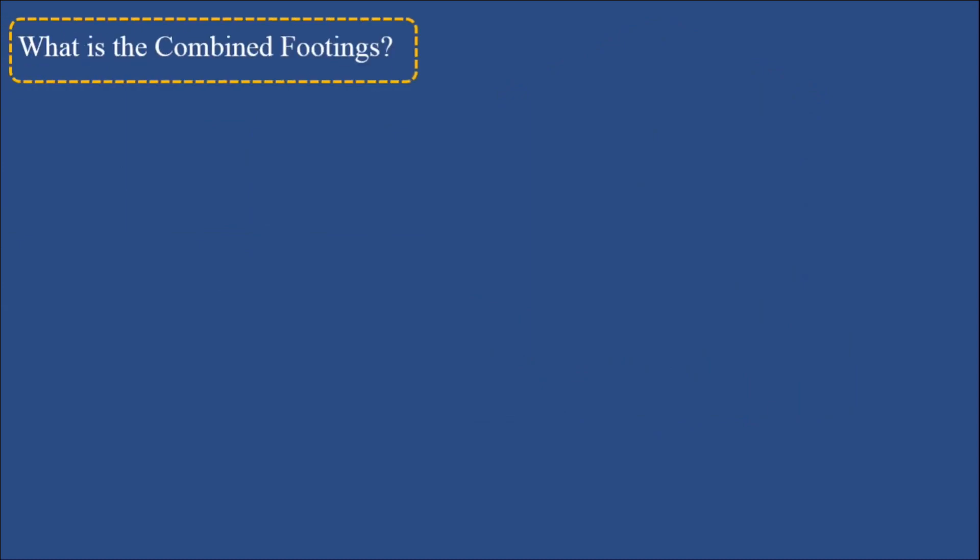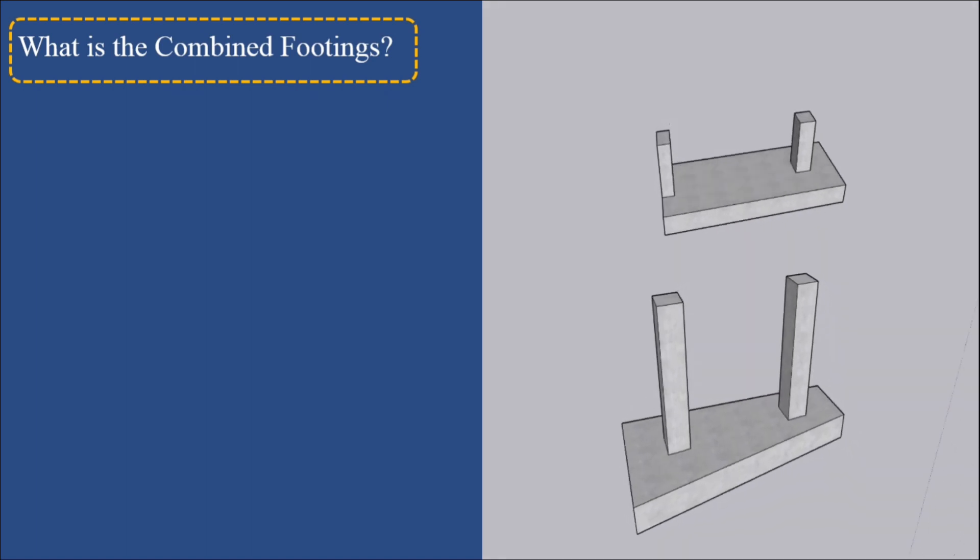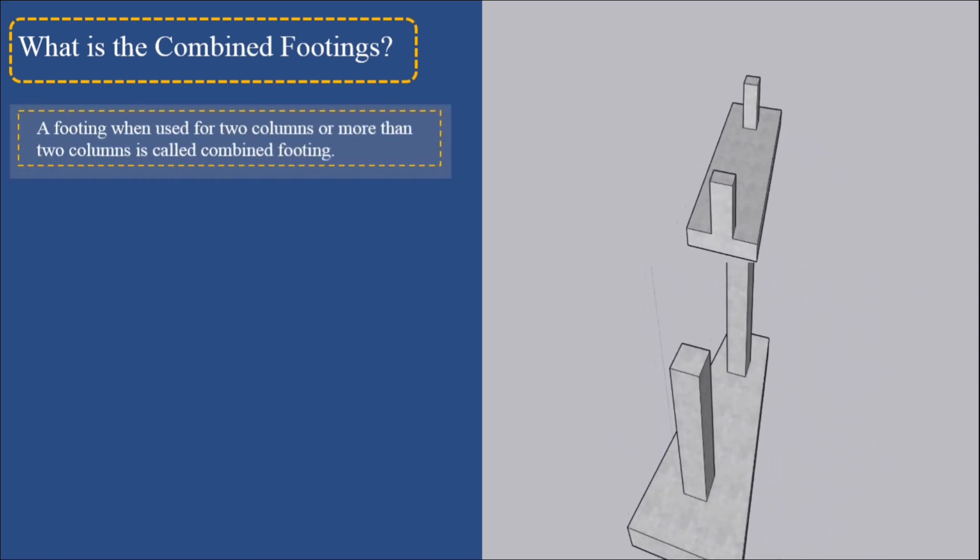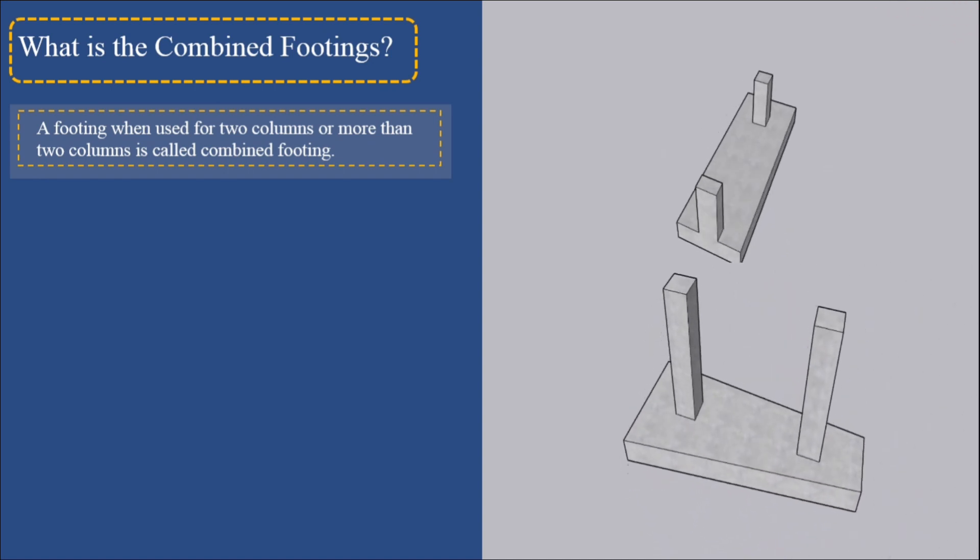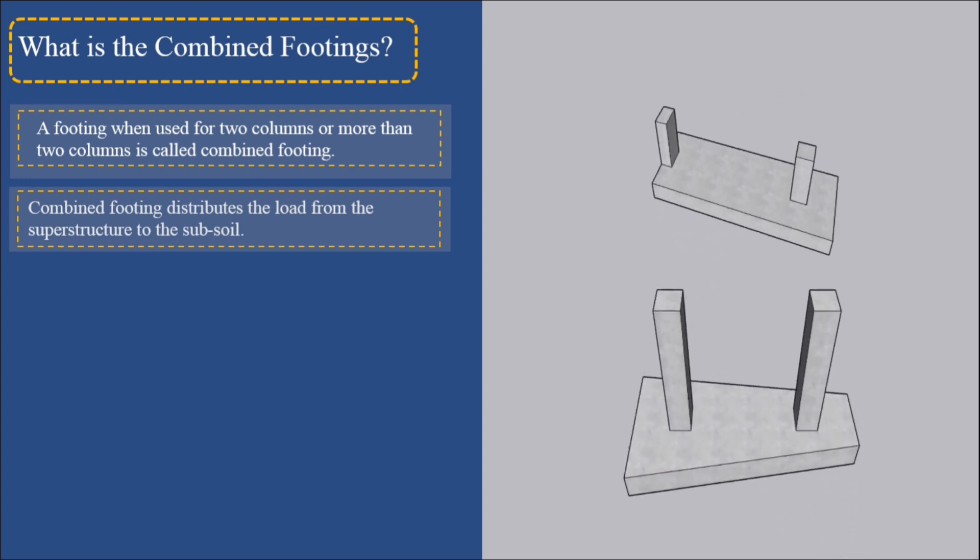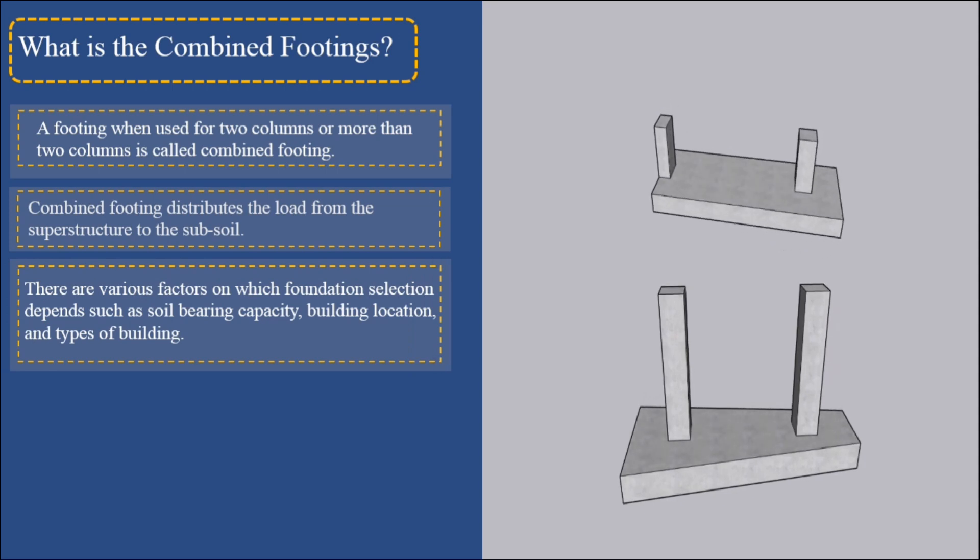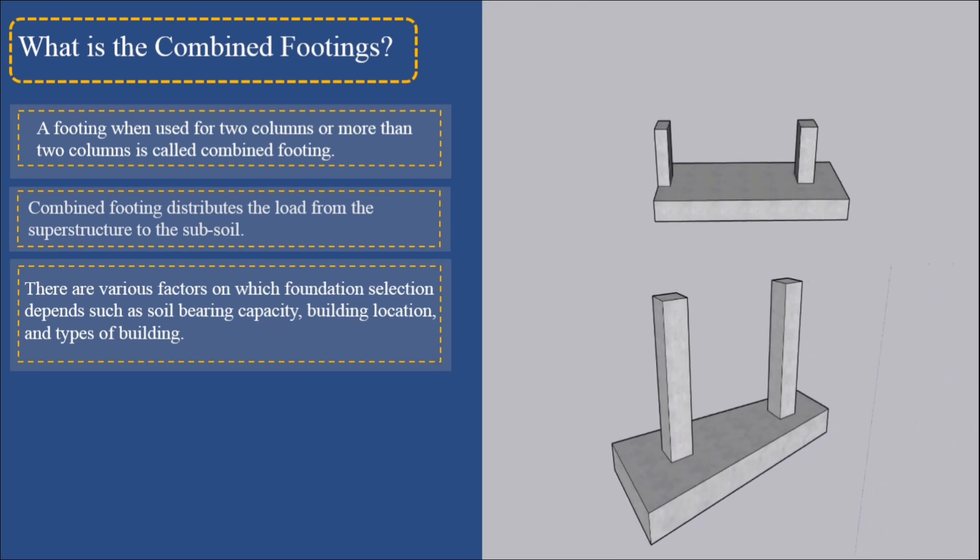What is combined footing? A footing when used for two columns or more than two columns is called combined footing. Combined footing distributes the load from the superstructure to the subsoil. There are various factors on which foundation selection depends, such as soil bearing capacity, building location, and types of building.